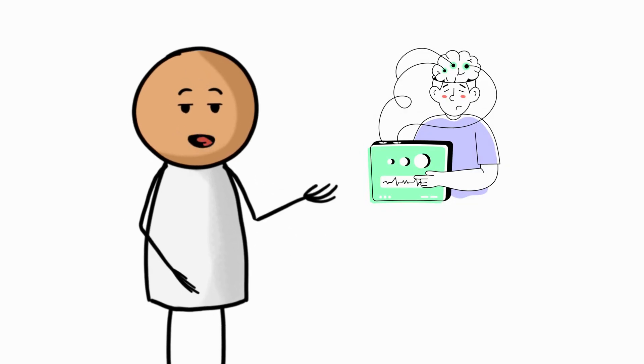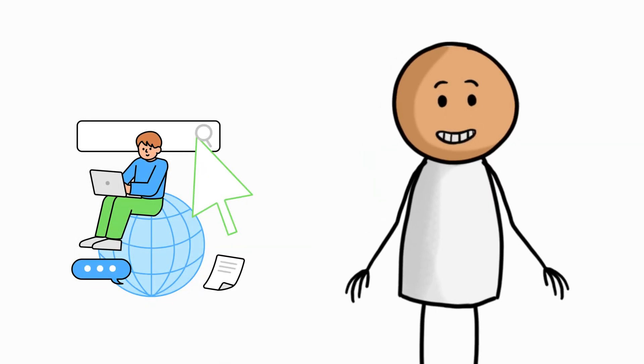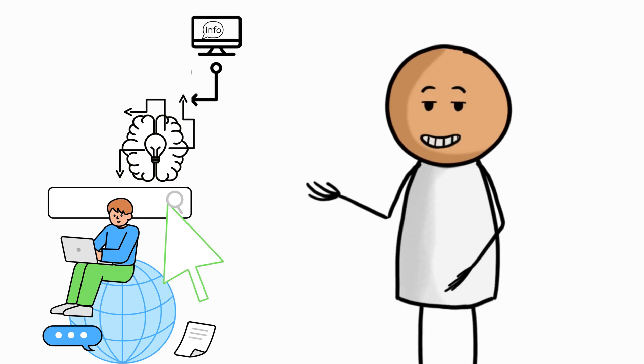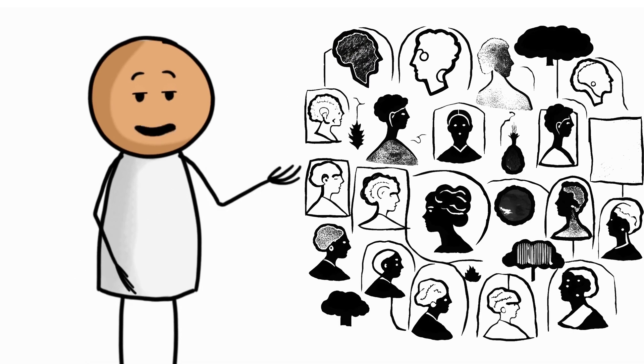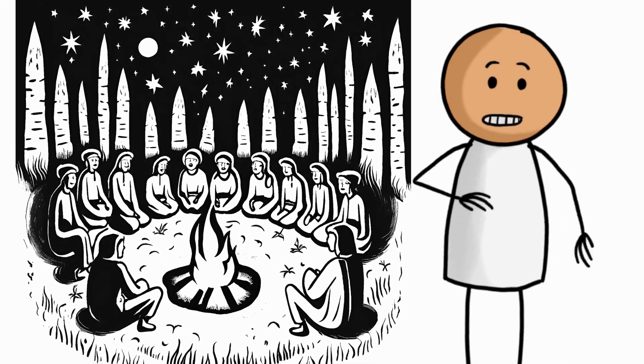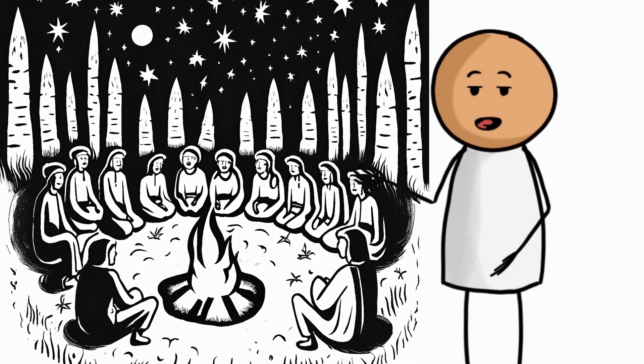Let's start with what's happening at a neurological level. Every time we search for something instead of recalling it, our brains are learning to rely on external sources for memory. We no longer have to store information internally because we know it's just a few keystrokes away. In evolutionary terms, this is brand new territory. For tens of thousands of years, our ancestors honed their memory skills, relying on them to survive. Without writing systems or search engines, ancient cultures developed powerful mnemonic techniques to retain vital knowledge.